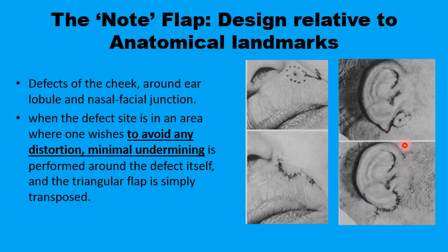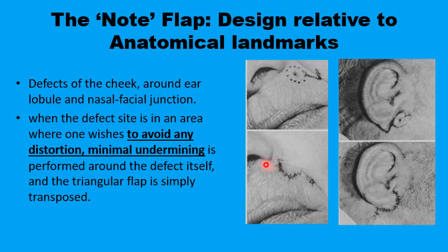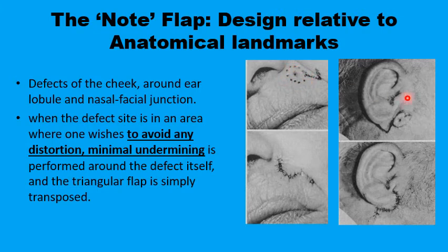Examples include placing the curvilinear part of the question mark around the ear lobule, in relation to the nasolabial fold, or beside the nasal ala. Remember that if the defect is very close to an anatomical landmark, undermining should be basically around the flap itself, with only limited undermining around the defect.